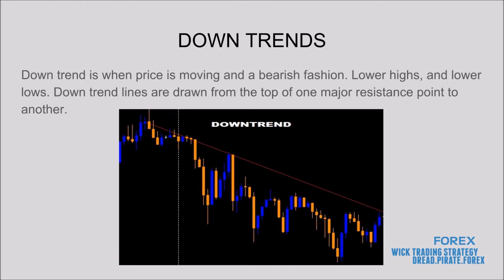A downtrend is when price is moving in a bearish fashion — lower highs and lower lows. Downtrend lines are drawn from the top of one major resistance point to another, just like you can see in the example: from the top of this resistance point to this resistance point, and so forth. You want to make sure you get it from the highest point of resistance to the next highest point of resistance on the chart to draw accurate trends.